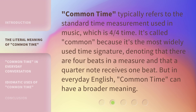Common time typically refers to the standard time measurement used in music, which is four-quarters time. It's called common because it's the most widely used time signature, denoting that there are four beats in a measure and that a quarter note receives one beat. But in everyday English, common time can have a broader meaning.